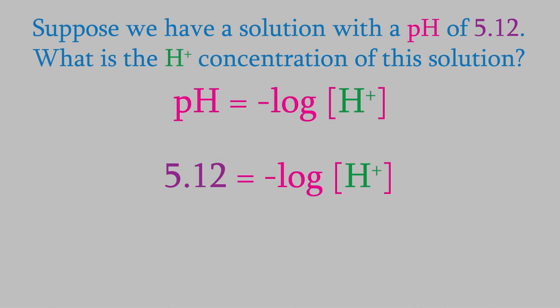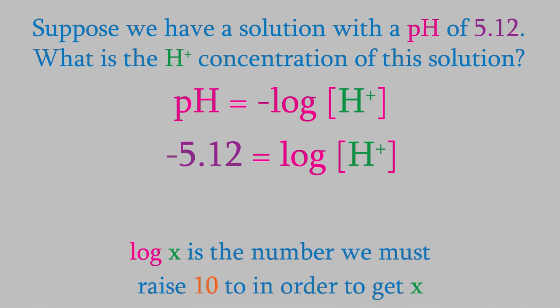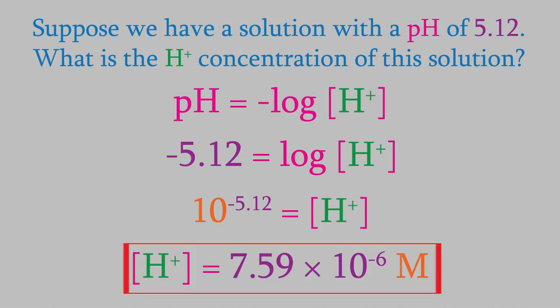First, we'll move the negative sign to the other side of the equation. Now, we need to get rid of the logarithm. Remember, the logarithm is the number we need to raise 10 to in order to get the number we're taking the log of. In other words, 10 raised to the exponent negative 5.12 will give us the H-plus concentration. That gives us a result of 7.59 times 10 to the minus 6 molar.